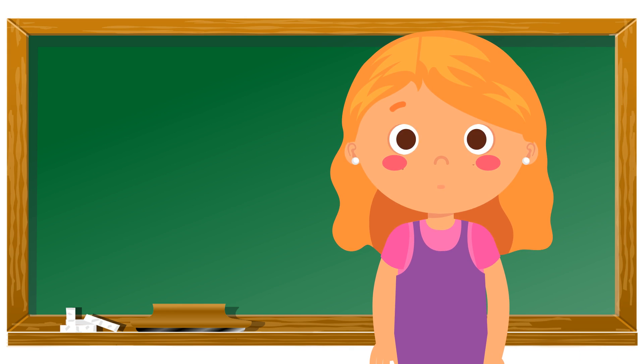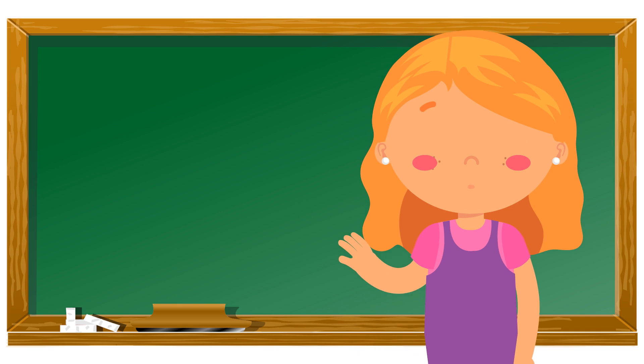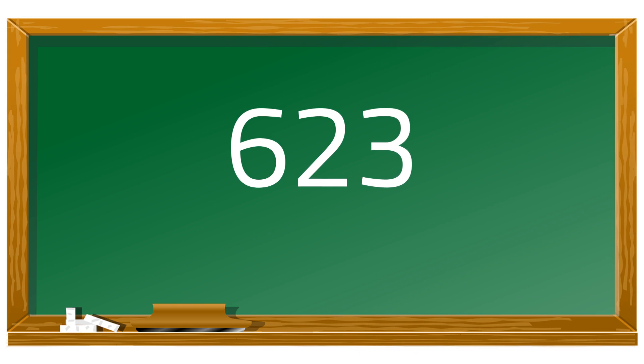Now that you know what the place values are and how to identify the value of each digit, let's have some activity. In 623, what is the place value of 2? What about its value?